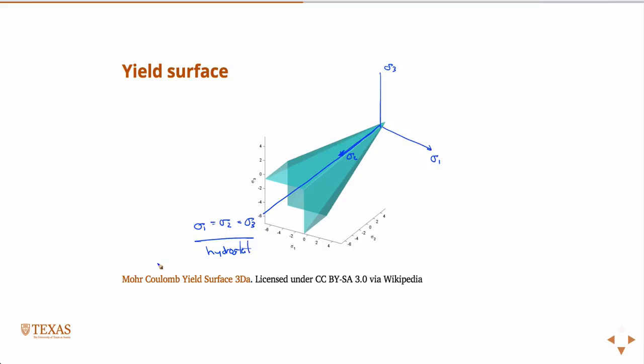Essentially, it's a function of pressure. So as I move along this line — in other words, if I increase the pressure, the hydrostatic part of the stress, the isotropic part, the diagonal — if I increase that, then I move along this line and I move out here.